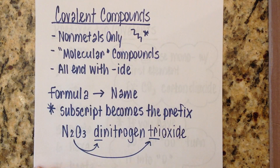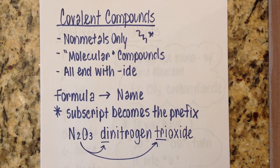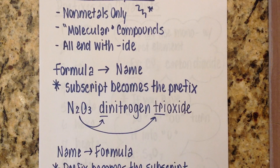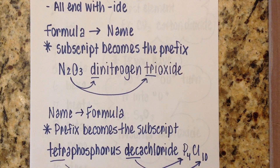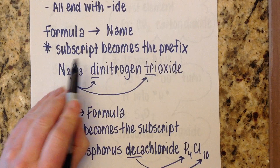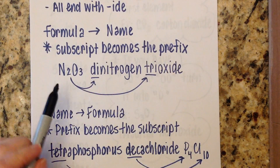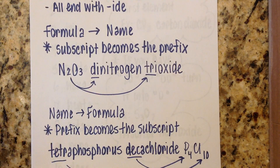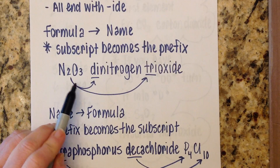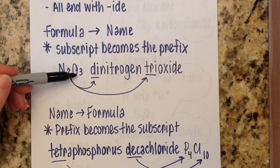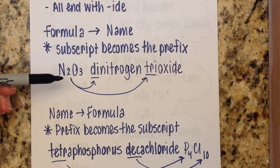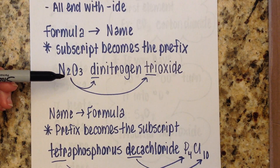Covalent compounds — also sometimes called molecular compounds — are nonmetals only and all end with IDE. Here's a simple way to look at it: if we give you the formula and ask for the name, your subscript becomes the prefix. For example, in N2O3, I can see I have two nitrogens and three oxygens. The prefix for two is di, and the prefix for three is tri.